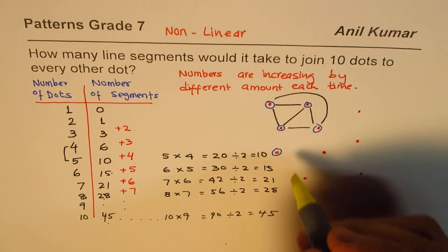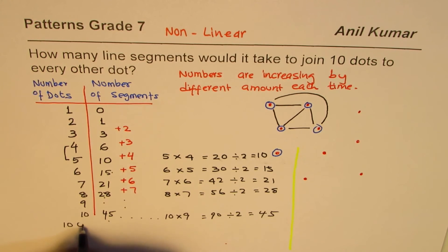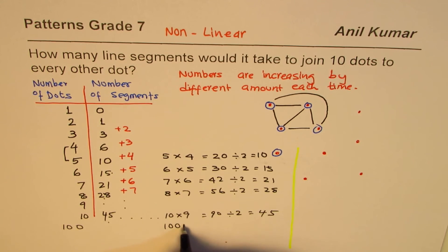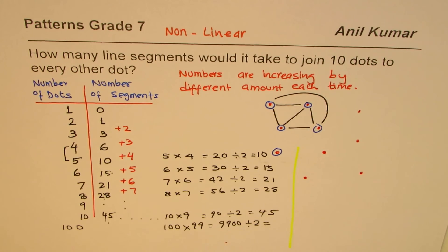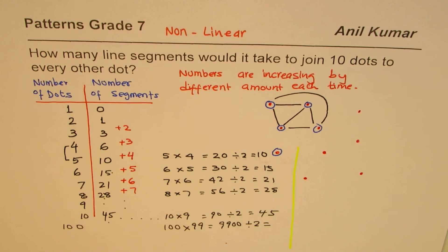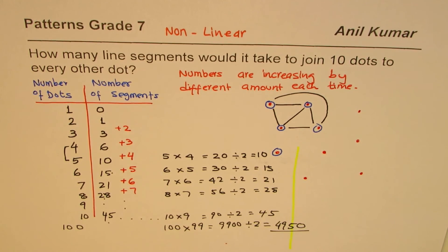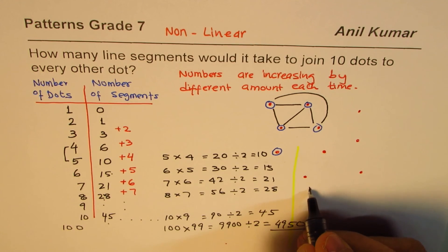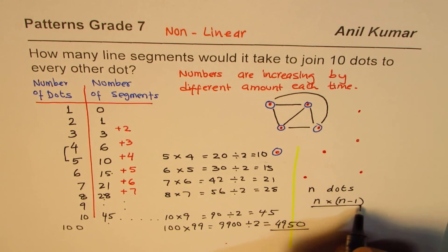Here you learn a strategy to find pattern rules, and from those rules we can find solutions for big numbers too. If there are one hundred dots, how many segments are required? The answer is one hundred times ninety-nine, divided by two — which gives us four thousand nine hundred and fifty. We can extrapolate using our explicit formula without having to draw everything out.